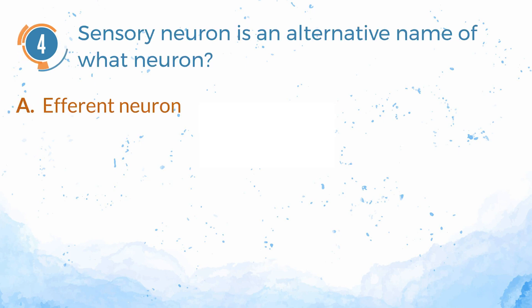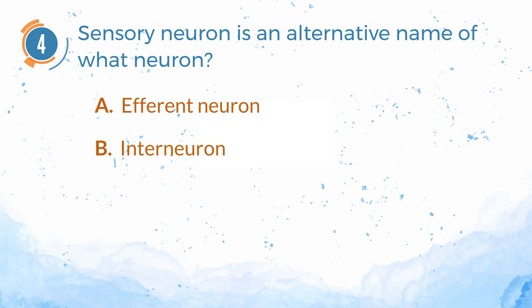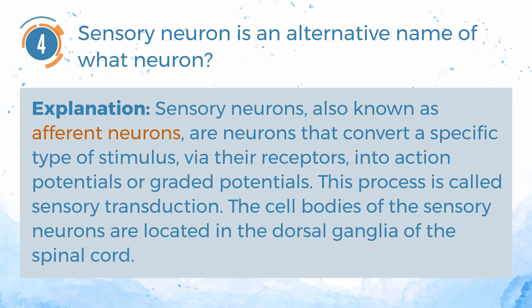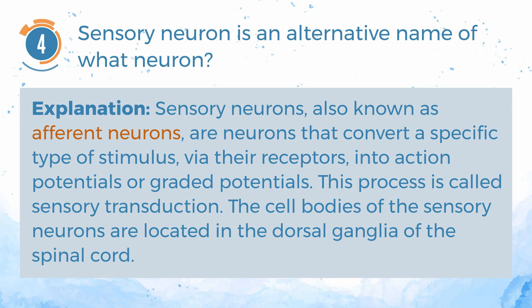Number 4. Sensory neuron is an alternative name of what neuron? A. Efferent neuron. B. Interneuron. C. Afferent neuron. The answer is C — afferent neurons. Sensory neurons, also known as afferent neurons, are neurons that convert a specific type of stimulus, via their receptors, into action potentials or graded potentials. This process is called sensory transduction. The cell bodies of the sensory neurons are located in the dorsal ganglia of the spinal cord.